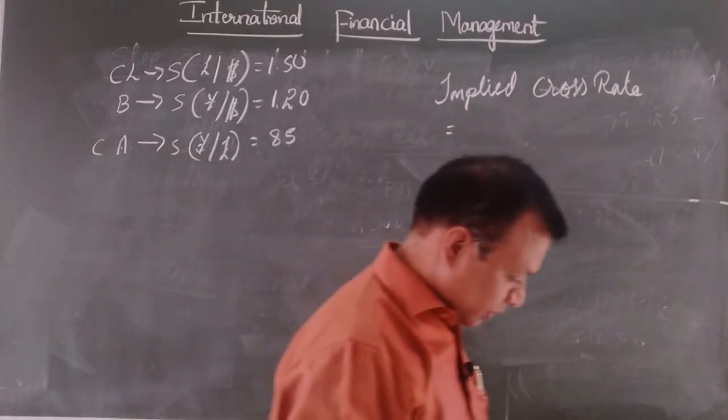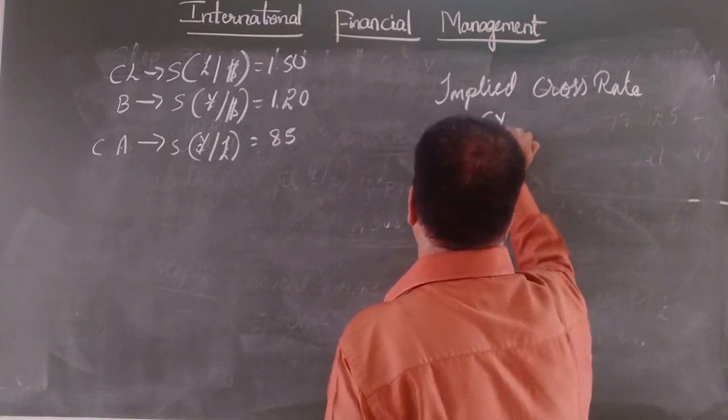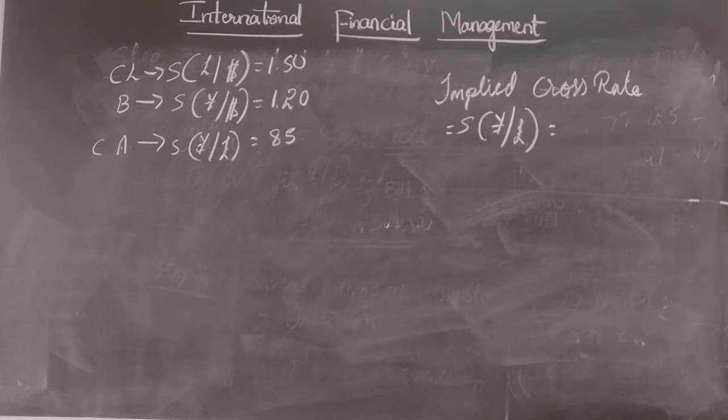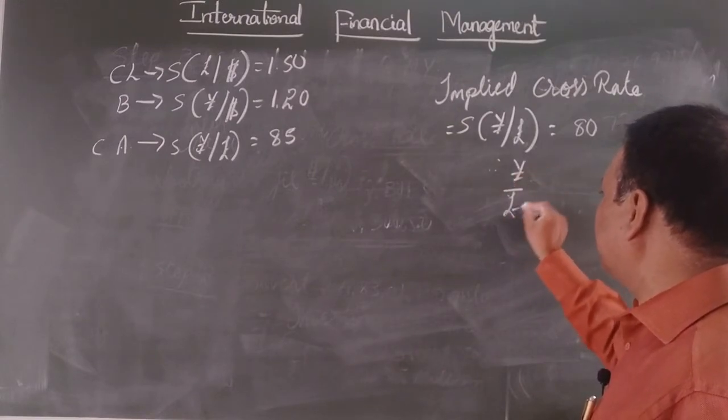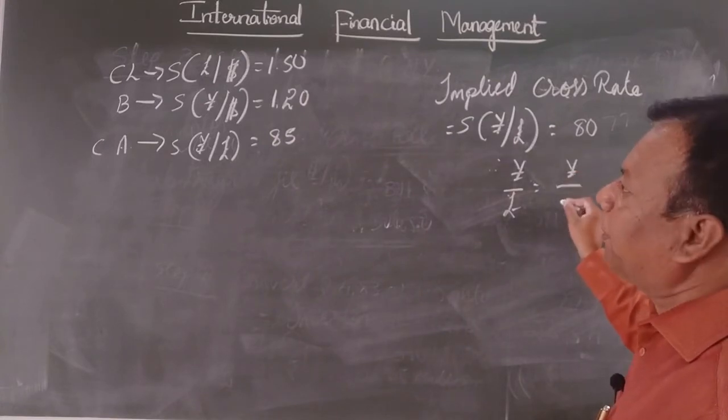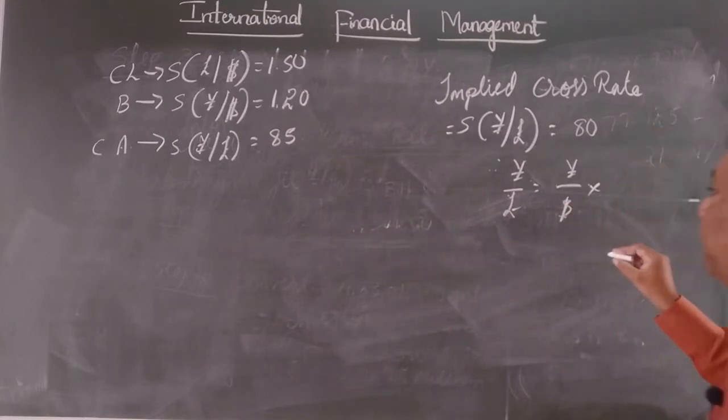Implied cross rate, first we have to find out the implied cross rate between spot rate of yen and pound is 80. If you calculate the implied cross rate between yen and pound, so how to do this? Yen by pound is equal to, so you should have numerator, we should have yen, yen by dollar.